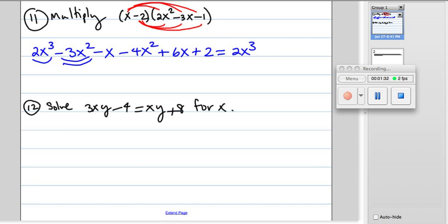Then we have a negative x and plus 6x, that's a total of 5x's, and then we just have a positive 2. So we put plus 2 and that's the answer. Next, number 12, it says solve for x.